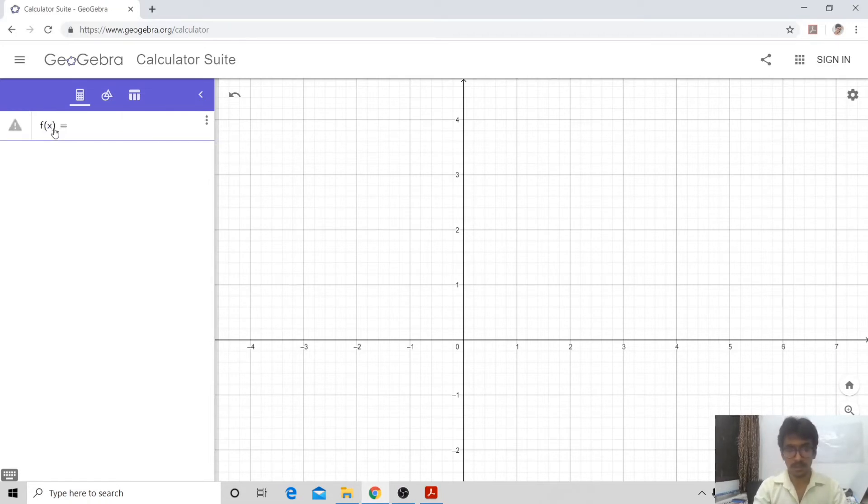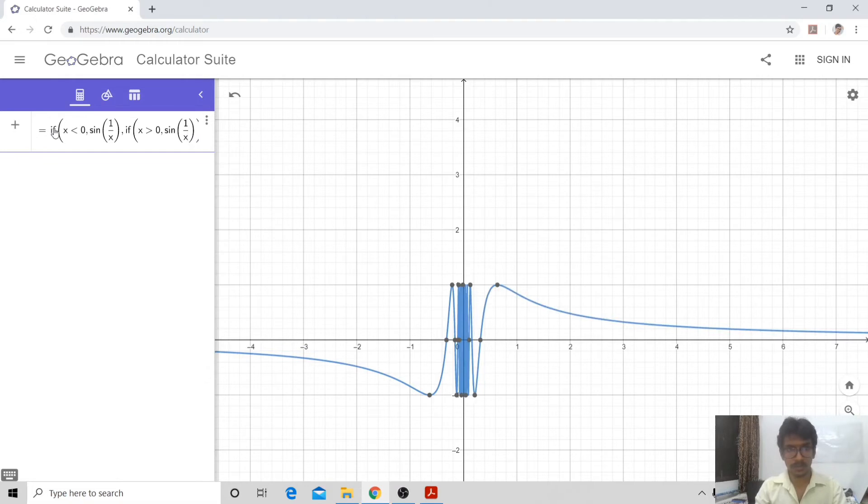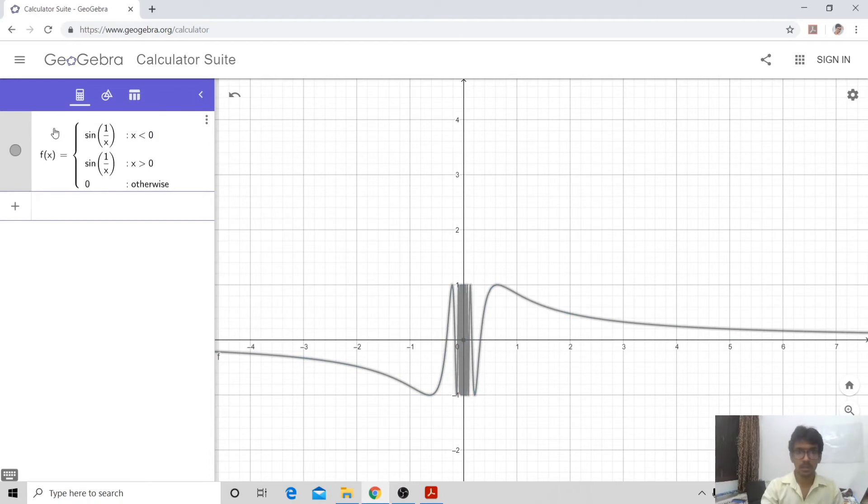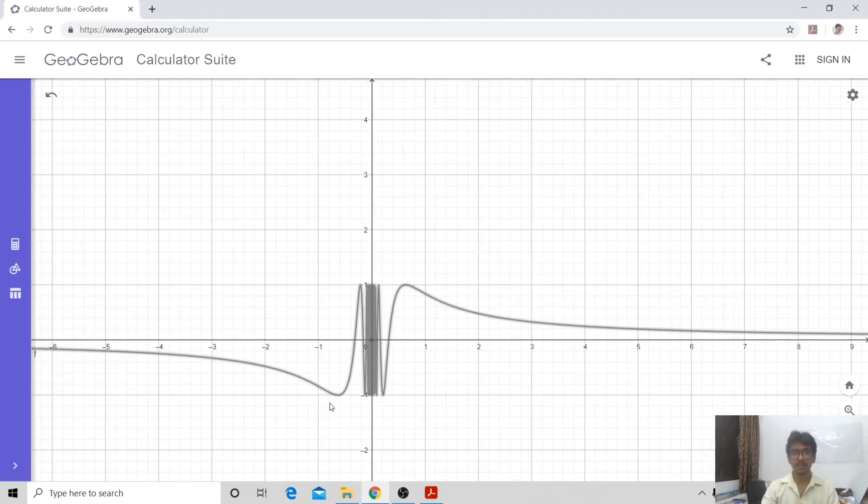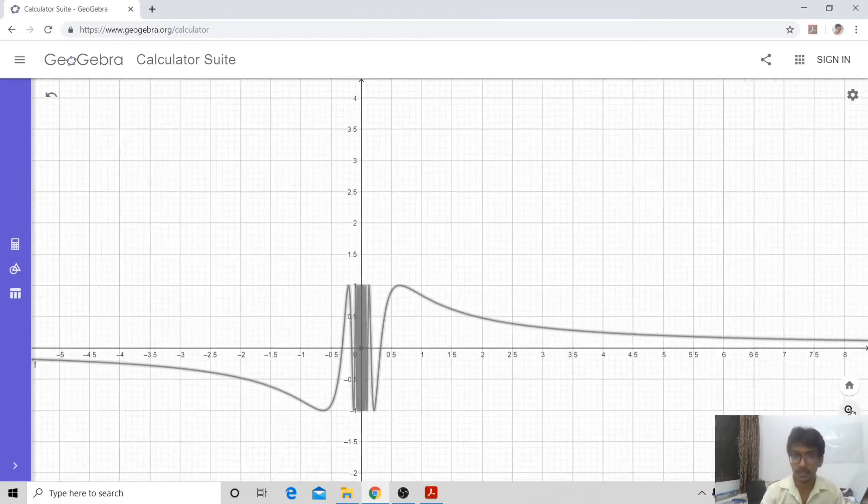f(x) is defined in the form of, when x is a negative quantity, it is defined as sin(1/x). And when x is a positive quantity, then also it is sin(1/x), and 0 when it is 0. Here you may very well see that something is happening in this area. What is it happening? Let us zoom and see.